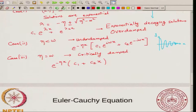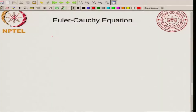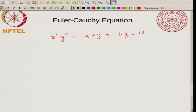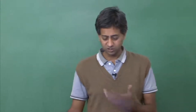Next I will mention another type of equation which you can also solve using very similar tricks. This is called the Euler-Cauchy equation, and it has the form x² y double prime plus a times x y prime plus b times y equals zero, where a and b are constants. Notice that when you have a second derivative you multiply by x², and when you have a first derivative you multiply by x. Writing it in this form suggests what the solution should look like.